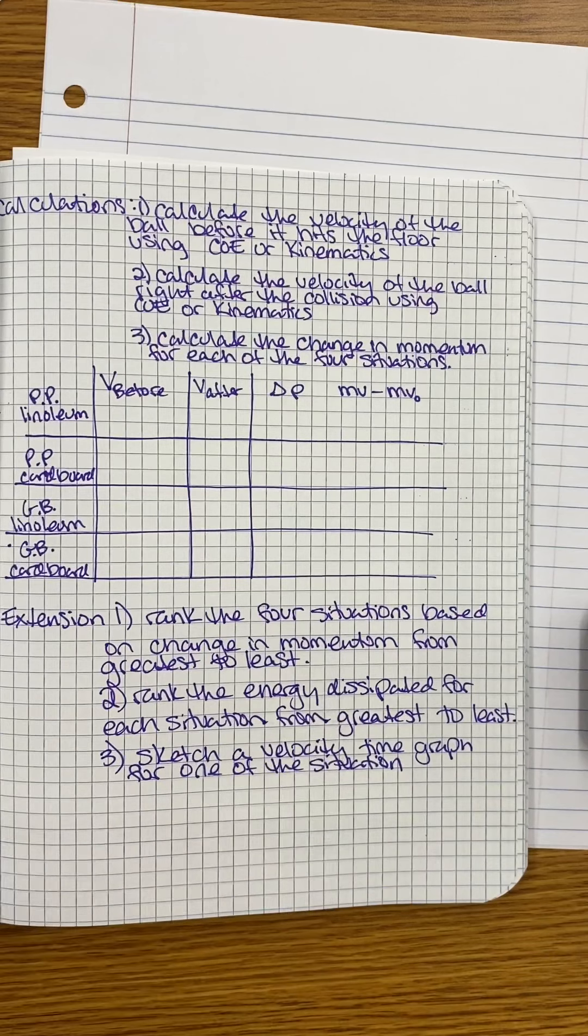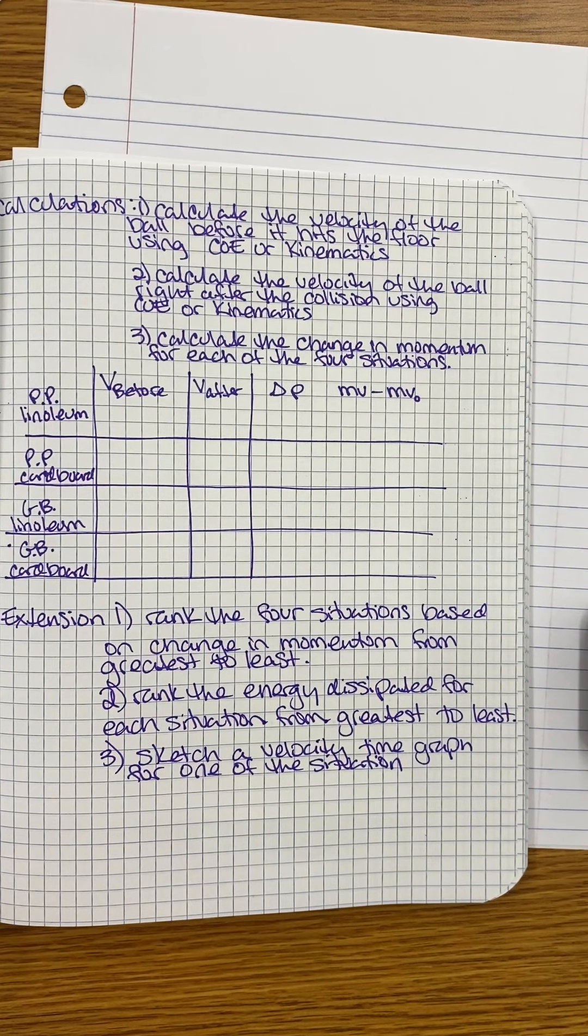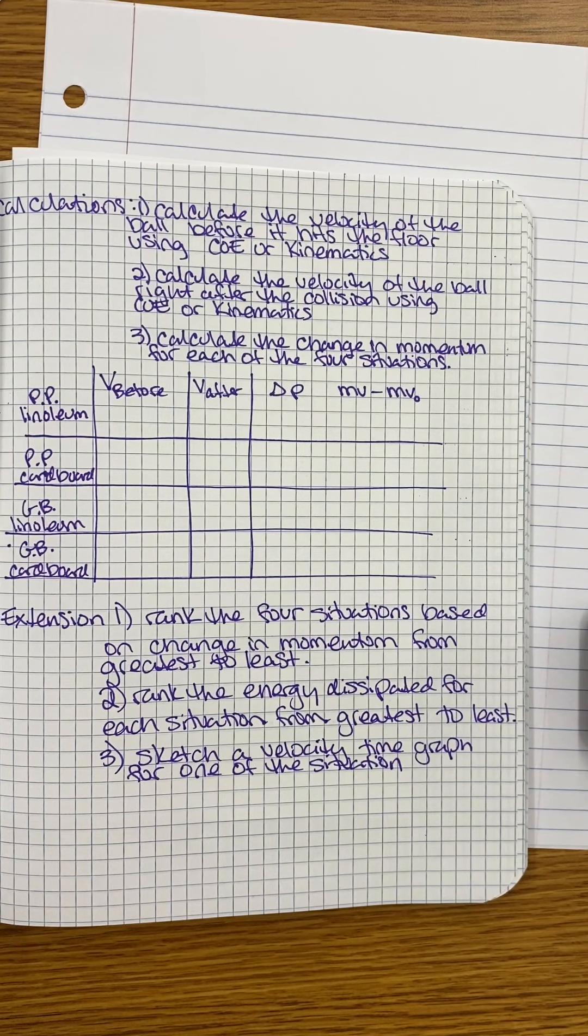Our calculations. We are going to calculate the velocity of the ball before it hits the floor using conservation of energy, or you can use a kinematic. And then we are going to calculate the velocity post-collision using conservation of energy or a kinematic, one or the other.